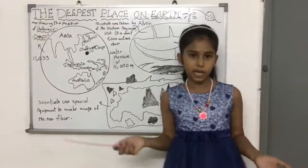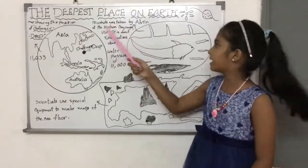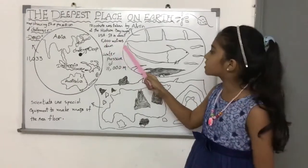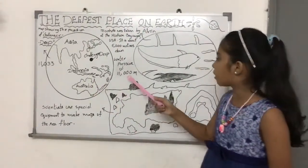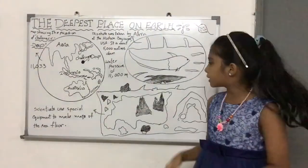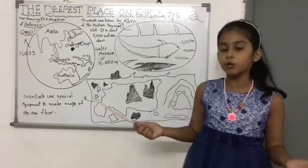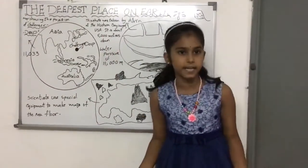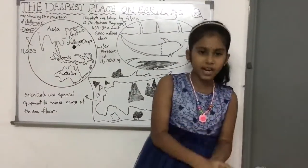Now, this photo was taken by Alvin at the Hudson Bay Canyon, USA. It is about 5,000 meters down. The water pressure is about 11,000 meters. It is enormous. If you were there, you could feel that you were being crushed under 50 jumbo jets. That's a lot and you would be crushed like a paper.